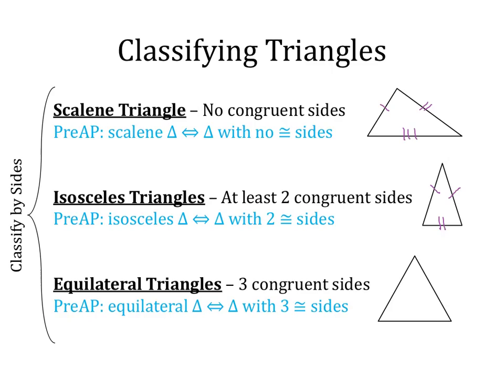And then lastly, we have equilateral triangles. Equilateral triangles have three congruent sides, so this side is congruent to this side is congruent to this side. So all three sides have the same number of tick marks.